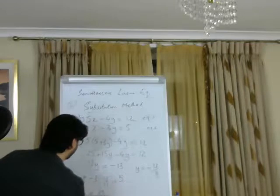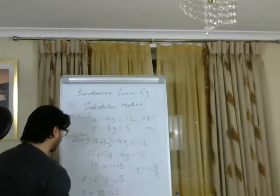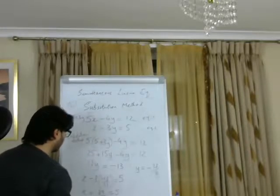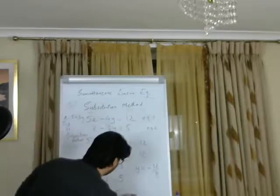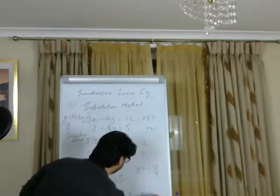Now we can see here that becomes x plus 39 over 11 equals 5. And what we're going to do here, we're going to put x equals 5 minus 39 over 11.